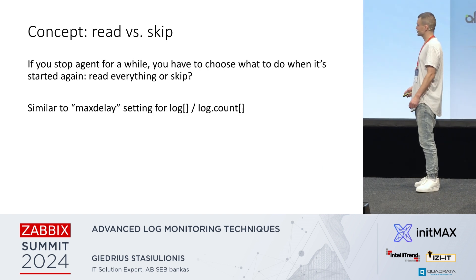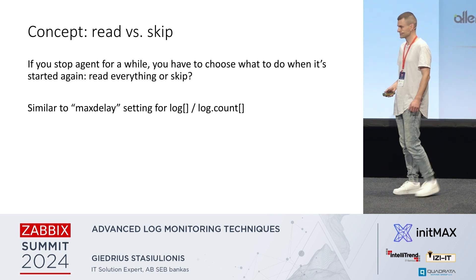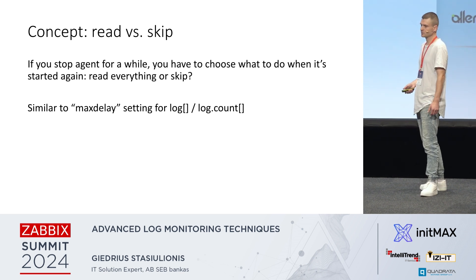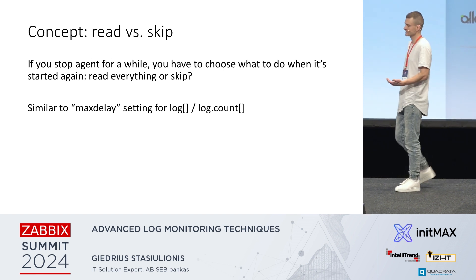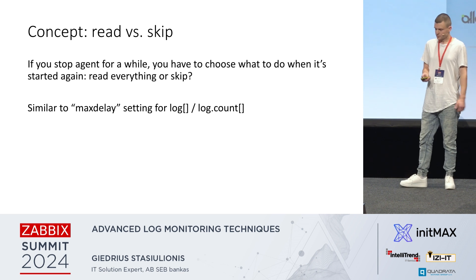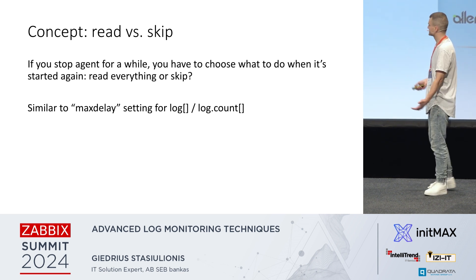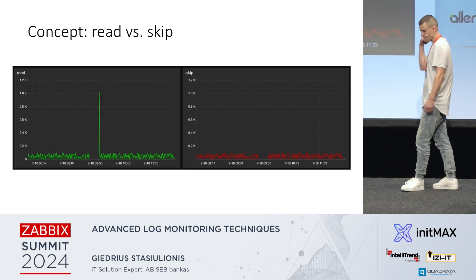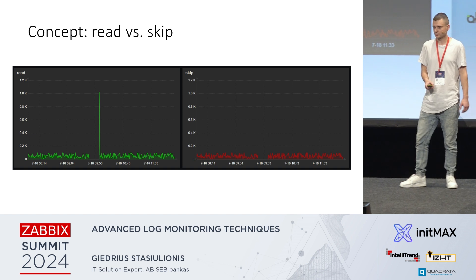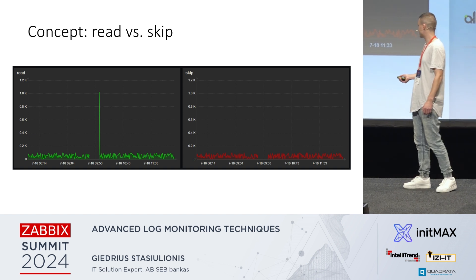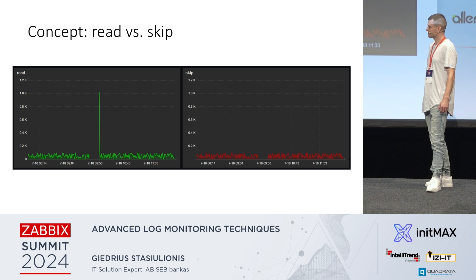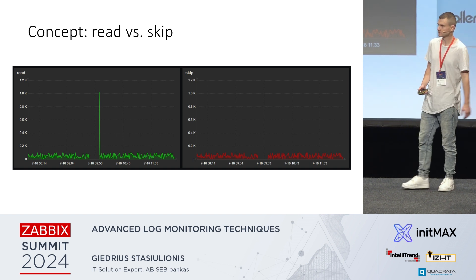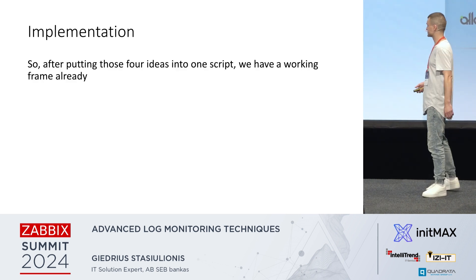The last concept is about the stop period. If you stop the agent for a while and then restart it, the log doesn't care — it just lives its own life and keeps being appended. So you have to choose: once the agent restarts, do you want to skip the data from the stop period, or read it? For log count type items, I would choose to skip it — I'd rather have a gap than a spike. But for a log type item where you want to catch everything, you'd most likely want to read it.